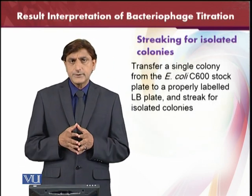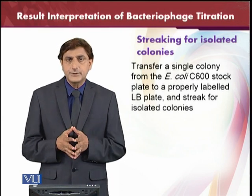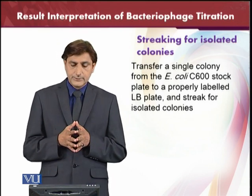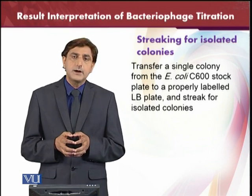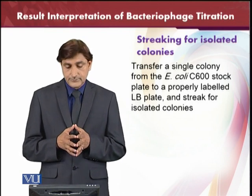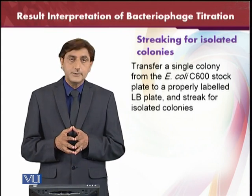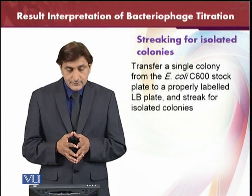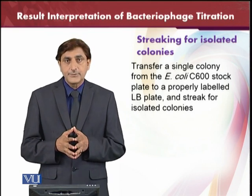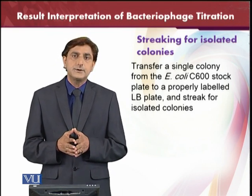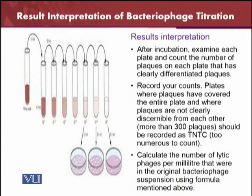The most important thing in the bacteriophage titration is the streaking for isolated colonies. A single colony is transferred from the E. coli C600 stock plate to a properly labeled LB plate, then streak for isolated colonies so that we can see better results. This streaking procedure is very important, and after using these procedures we need to examine the results in terms of specific phage counts.